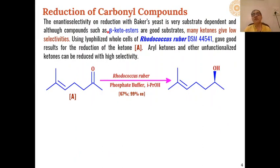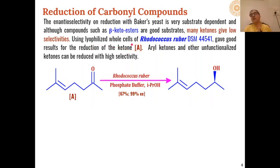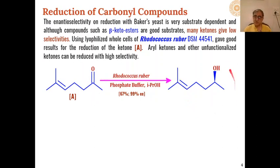As seen in the previous examples, the enantioselectivity with baker's yeast was very substrate-dependent, and mainly beta-keto ester substrates were used. Ketones give very low selectivity. Therefore, some other microorganisms were used — for example, the whole cells of Rhodotorula rubra were used for the reduction of these types of ketones. It selectively reduced only the carbonyl compound; the carbon-carbon double bond was not affected. The product was obtained in 67% yield with 99% enantiomeric excess, so enantioselectivity was very high in this case.